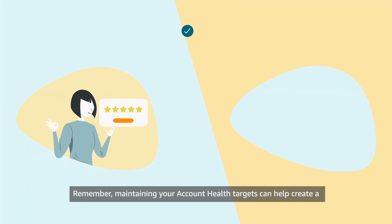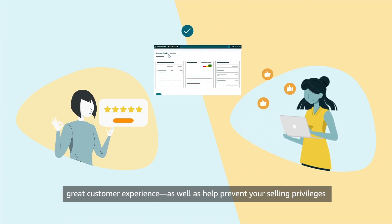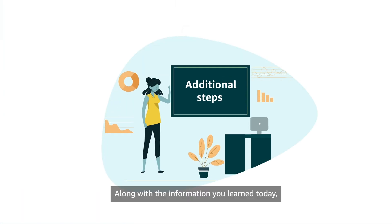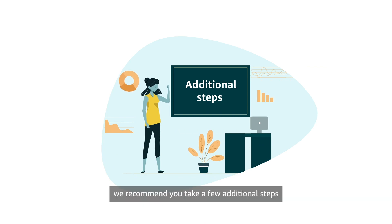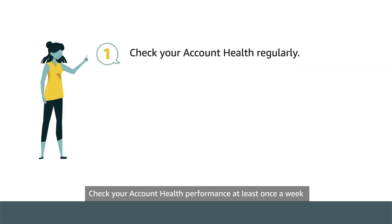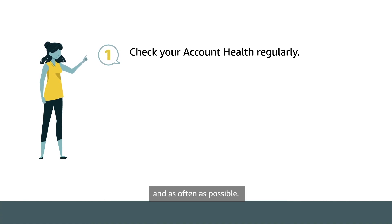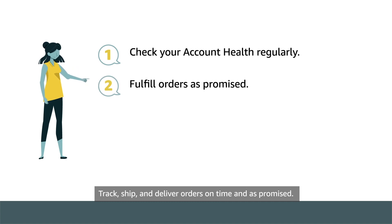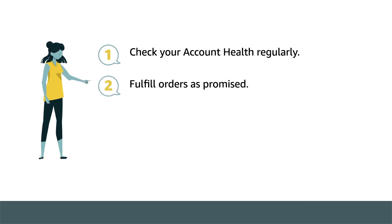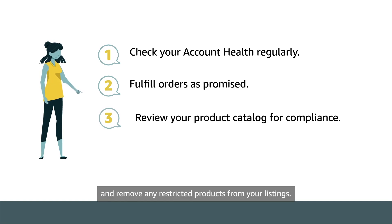Remember, maintaining your account health targets can help create a great customer experience, as well as help prevent your selling privileges from being negatively impacted. Along with the information you learned today, we recommend you take a few additional steps to help maintain your account health and avoid interruption to your business. Check your account health performance at least once a week and as often as possible. Track, ship, and deliver orders on time and as promised. Set a schedule to review your product catalogue and remove any restricted products from your listings.